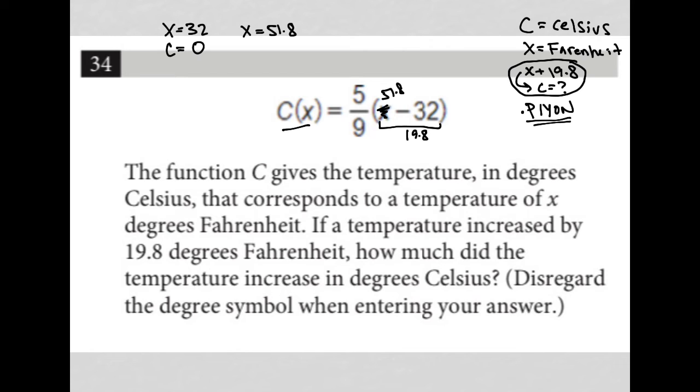So all I'm doing now is multiplying that 19.8 by 5 ninths in order to figure out what my Celsius is. And when I do that, put that in my calculator, 19.8 times 5 ninths, I get that my Celsius is 11 degrees.